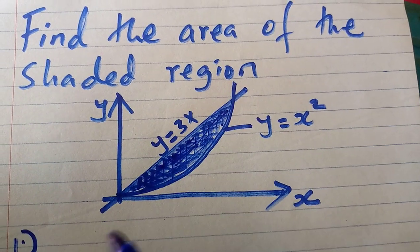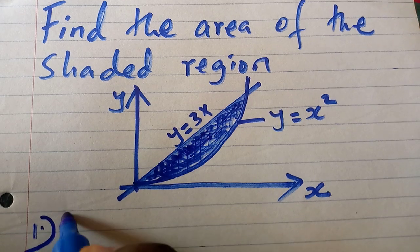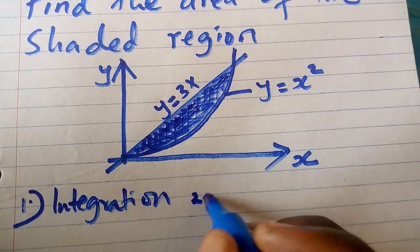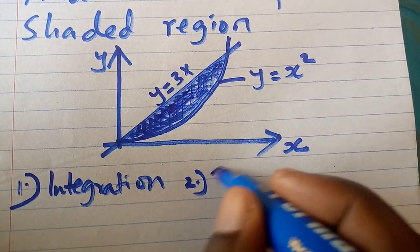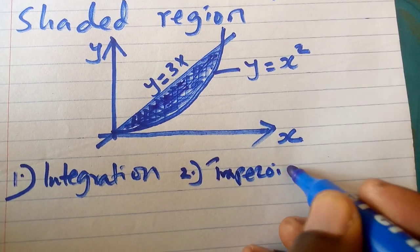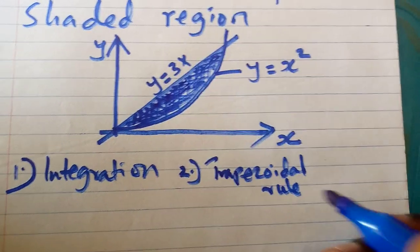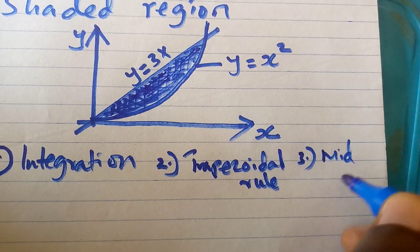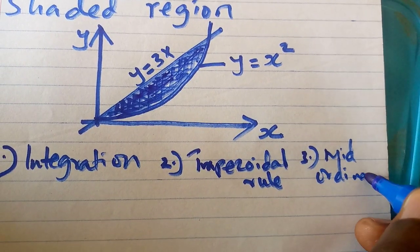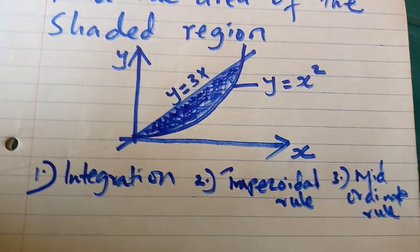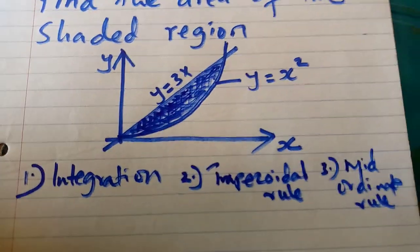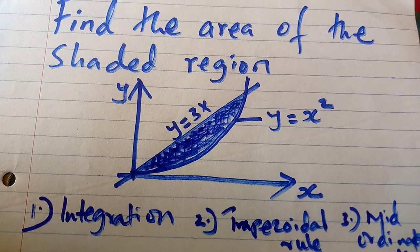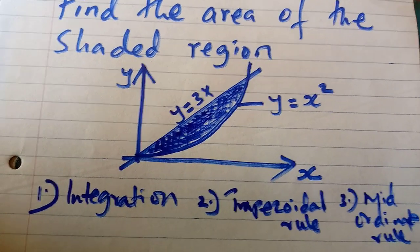So there are three formulas that I'm going to use. I'm going to use the first approach, the integration method. The second approach, I'm going to use the trapezoidal rule. And the third approach, I'm going to use mid-ordinate rule. So we have each and every step that you require in order to calculate the area of this shaded part or any other shaded part that will be given.